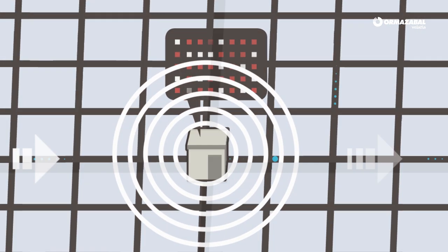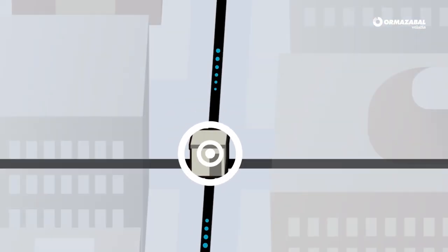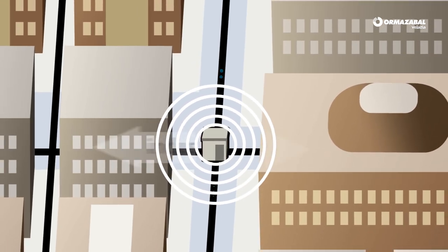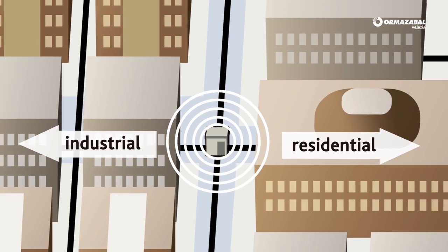From the substation on, the electricity continues its way through different transformer substations, close to consumption areas, where it will again be transformed for residential or industrial use.